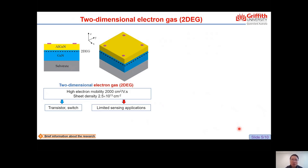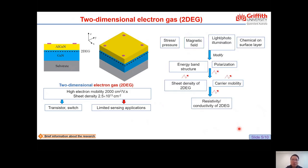Several research studies show that the 2DEG is very sensitive to stress, pressure, magnetic field, light photo-illumination, or even chemical species on the surface layer. So in this work, we will develop a photodetector utilizing the 2DEG.